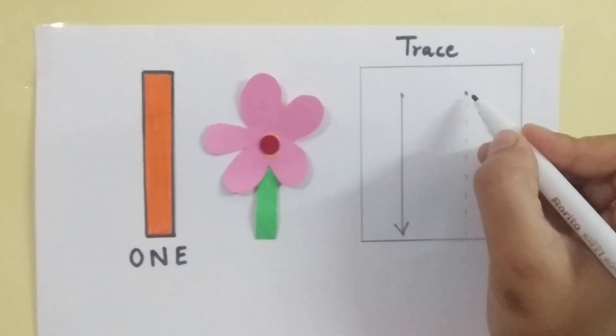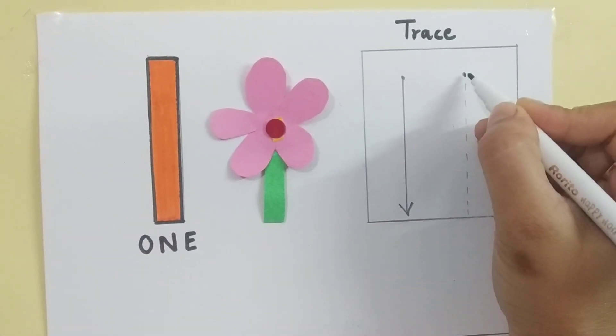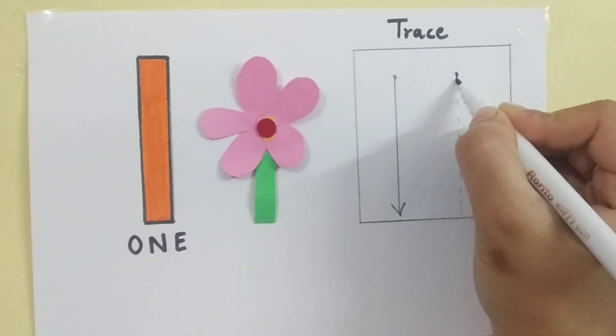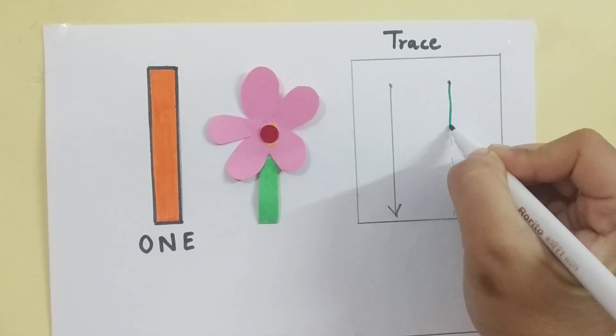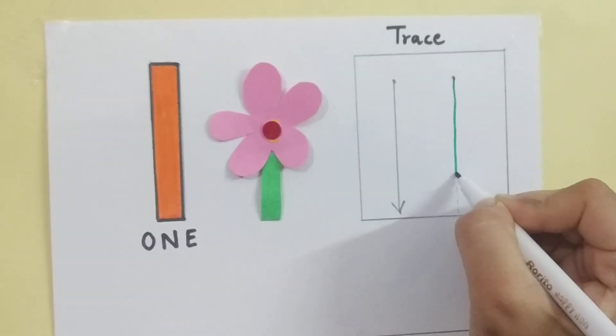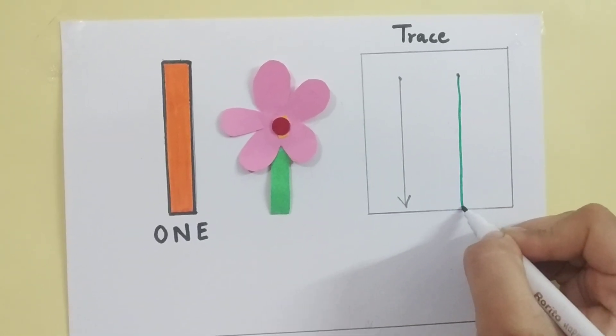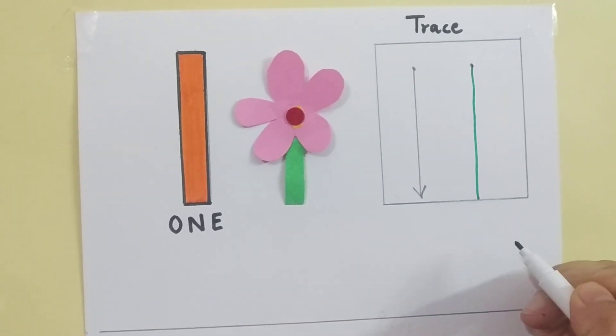Now, look how. See, I am starting from this dot. I will make a standing line like this. Down and touch the bottom line. 1.